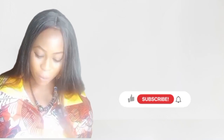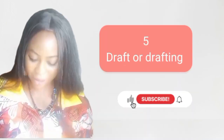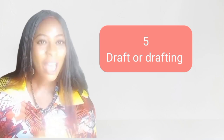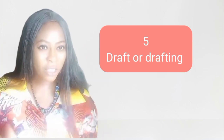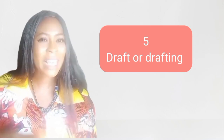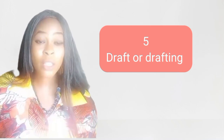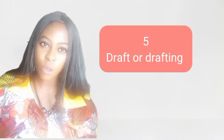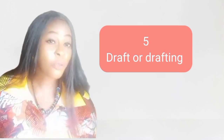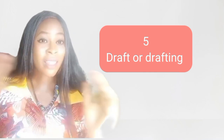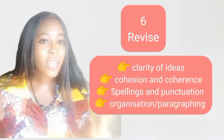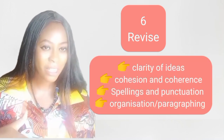Moving on to point number five: drafts. At this point of drafting, you already have a sketch of everything you want to write in different blocks. Just put them into writing. You could use Microsoft Word or put them onto a sheet of paper before you type them. Moving on to the next part, which is point six: revise. Look out for clarity of ideas and check if there is cohesion and coherence in your writing.